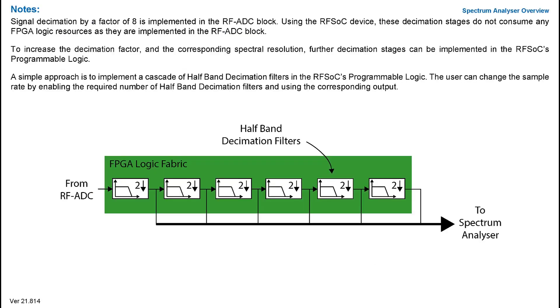To increase the decimation factor and the corresponding spectral resolution, further decimation stages can be implemented in the RFSOC's programmable logic. A fairly straightforward approach is to cascade several half-band decimation filters in the RFSOC's programmable logic. The user can then change the sample rate during runtime by selecting the appropriate tap from the cascade of filters.